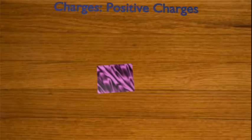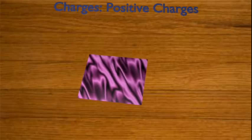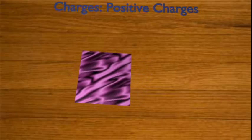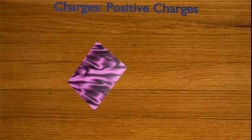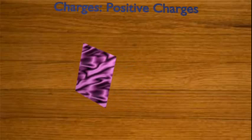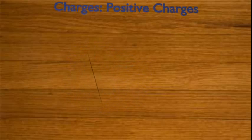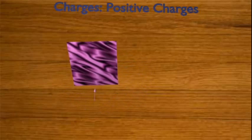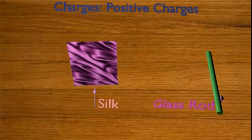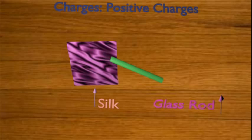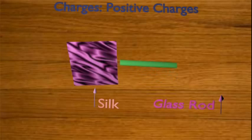Here we will discuss static electricity, specifically charging by friction. Static electricity is produced by friction. The two objects become charged with opposite types of charges as a result of the transfer of electrons from the least electron-loving material to the most electron-loving material.